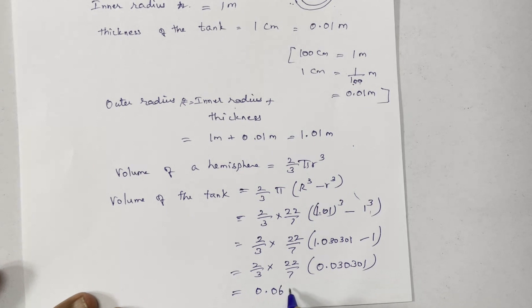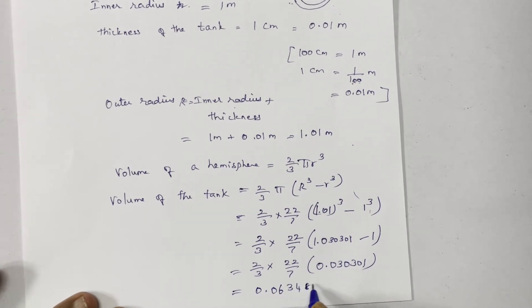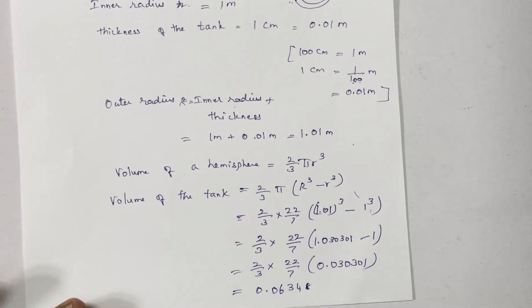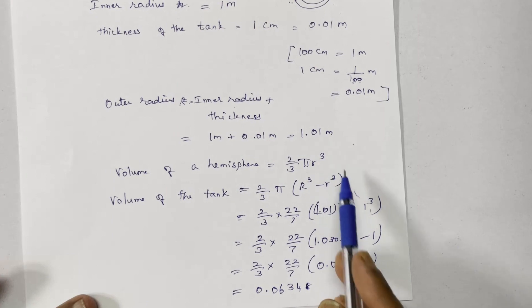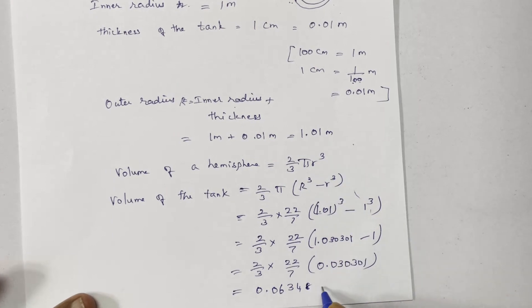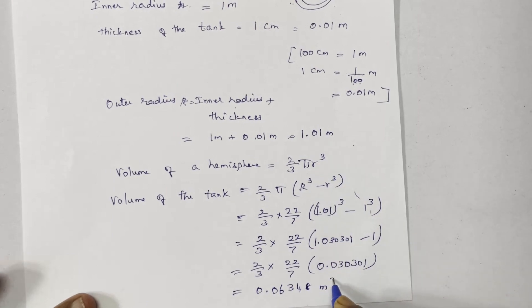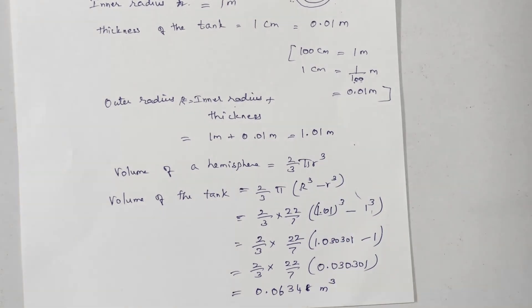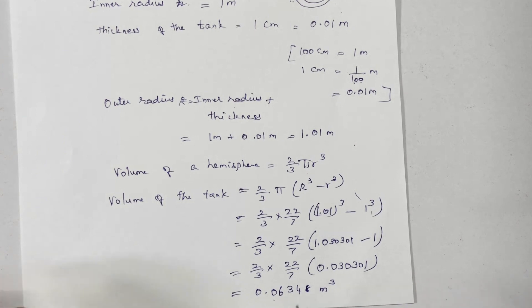The outer radius capital R is 1.01. After completing the calculation, 2 by 3 into 22 by 7 into 0.030301 gives the final answer of approximately 0.06348 meter cubed.